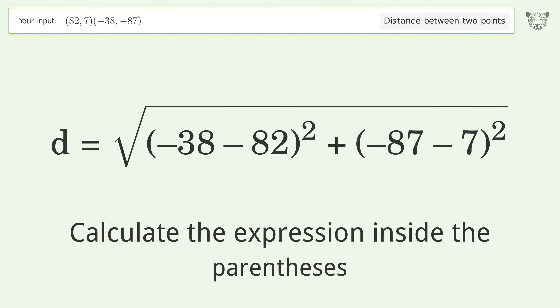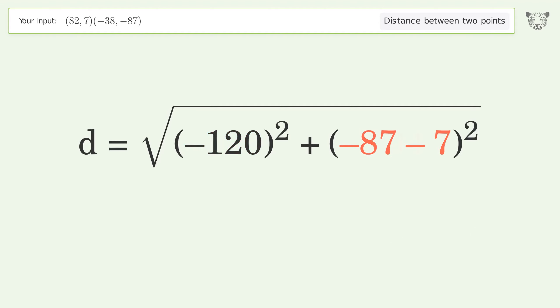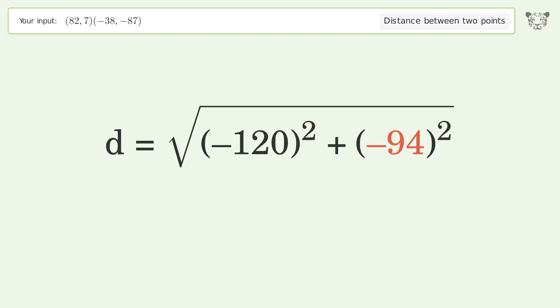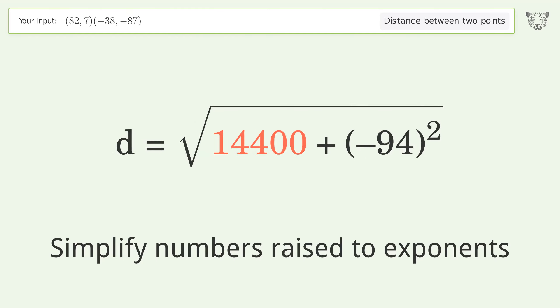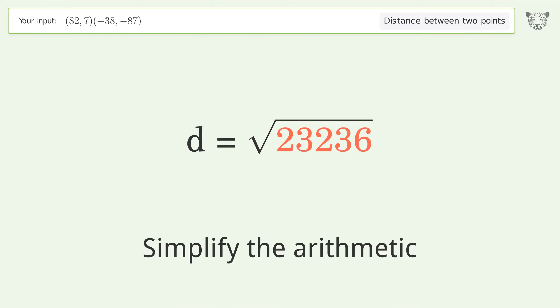Calculate the expression inside the parentheses. Simplify numbers raised to exponents. Simplify the arithmetic. And so the distance between the two points is the square root of 23,236 or 152.434.